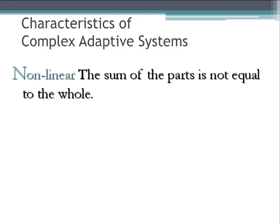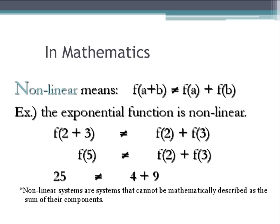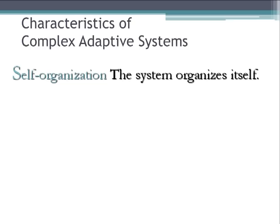Complex adaptive systems are also characterized by nonlinearities. By nonlinearity we mean the sum of the parts is not equal to the whole. In mathematics: f(a + b) ≠ f(a) + f(b). An example is the exponential function: f(5) = 5² = 25, which is not equal to f(2) + f(3) = 4 + 9 = 13. So 25 ≠ 13.